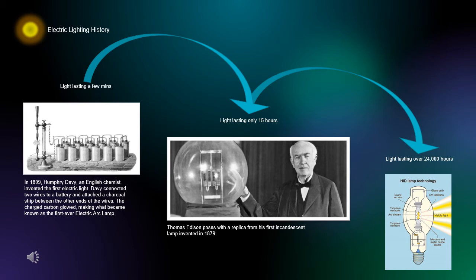Seventy years later, Thomas Edison created the first incandescent lamp, invented in 1879. This lamp lasted only 15 hours. Fast forward many years and many inventors later, the high intensity discharge lamp technology now has a light lasting over 24,000 hours.